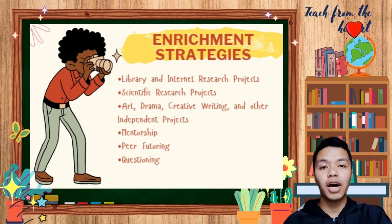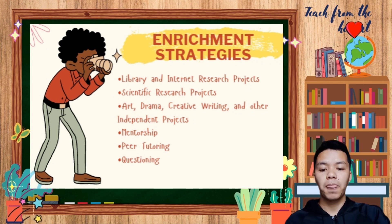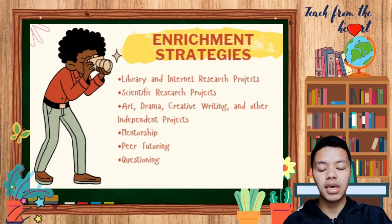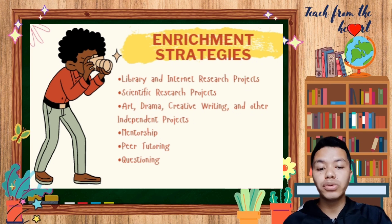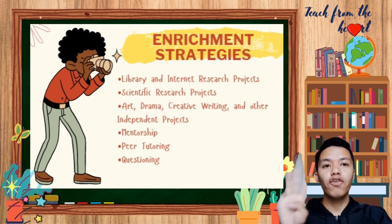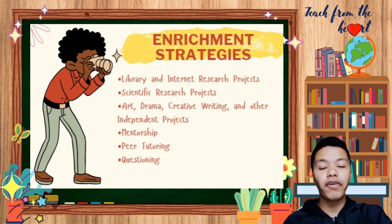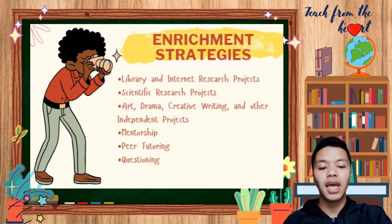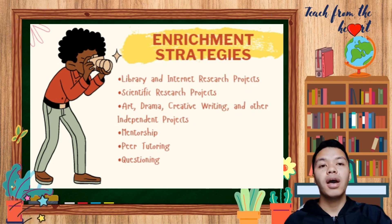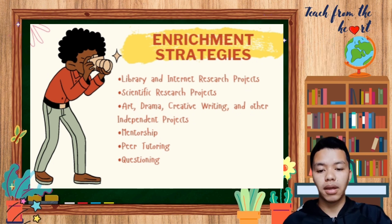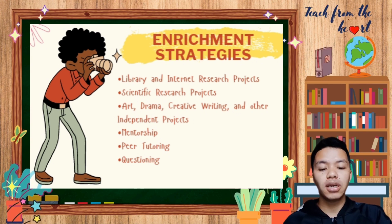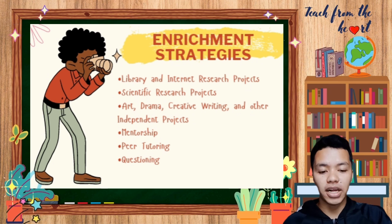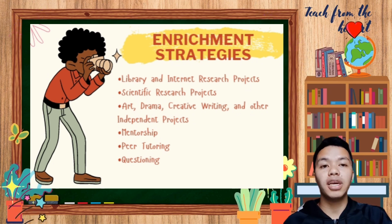The third enrichment strategy is art, drama, creative writing, and other independent projects. Art projects involve drawing, sculpting, and photography, while creative writing benefits school newspapers, online blogs, and interest groups. Fourth is mentorships, where professionals work with school interest clubs as a resource, role model, and friend to transfer skills and attitudes to learners. Fifth is peer tutoring, also known as peer-assisted learning, where learners act as tutors to other learners regardless of age or level, supervised by teachers. Teachers can also enhance critical and creative thinking by incorporating cognitively challenging questions in classrooms.